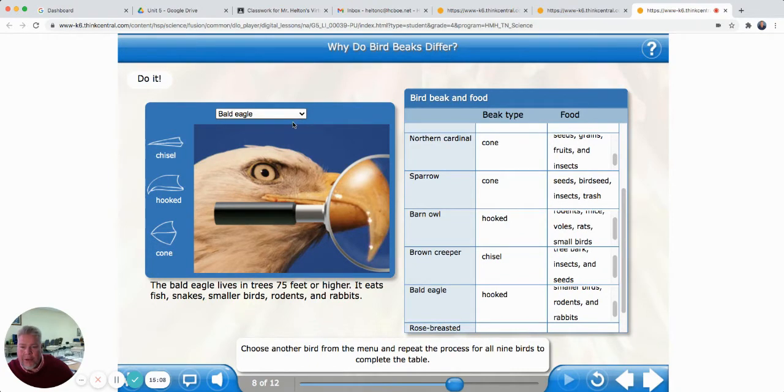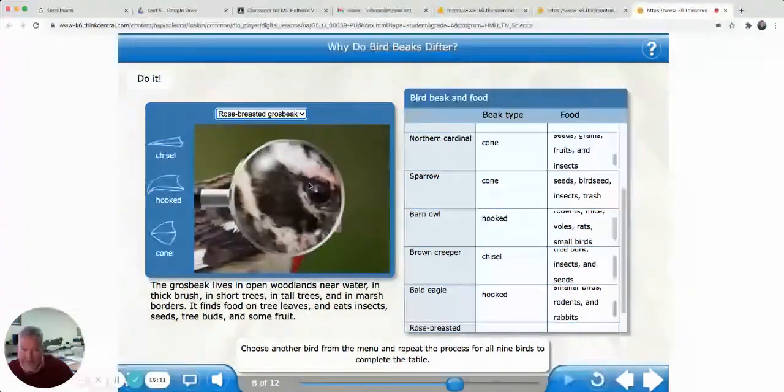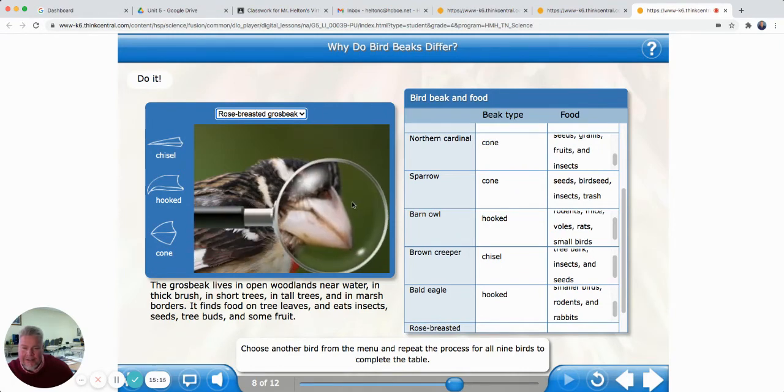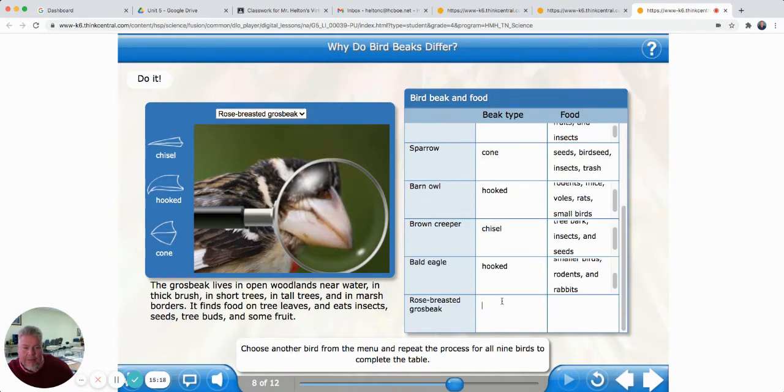And the rose-breasted grosbeak. Never heard of that. I can see why it's called the rose-breasted. Its chest is red there. And it's got a little cone-shaped bill. The grosbeak lives in open woodlands near water, in thick brush, in short trees, in tall trees, and in marsh borders. Lives a little bit everywhere, doesn't it? It finds food on tree leaves. It eats insects, seeds, tree buds, fruit. All right. I think we got all of them. Those are interesting. Let's go and see what we've got to do next.